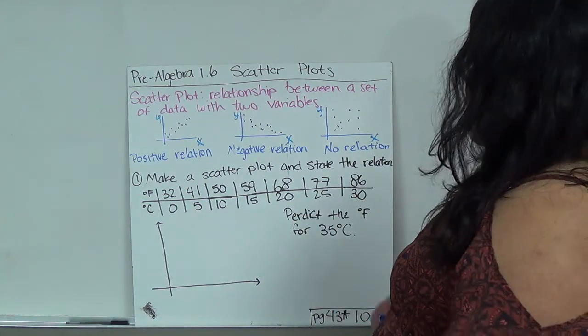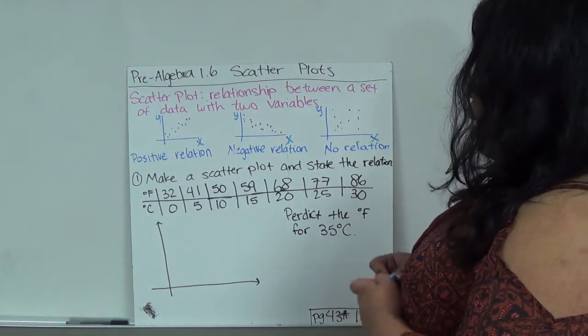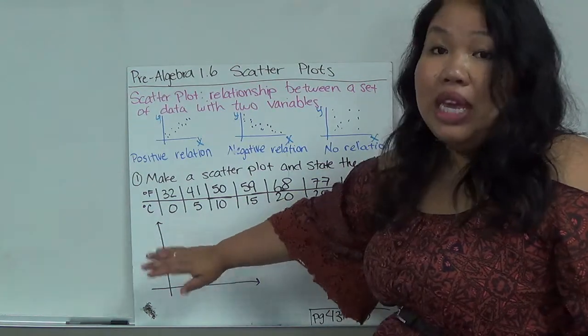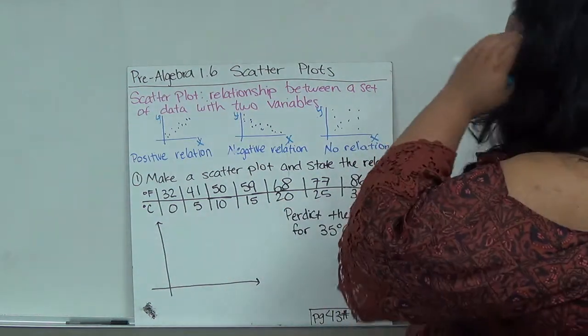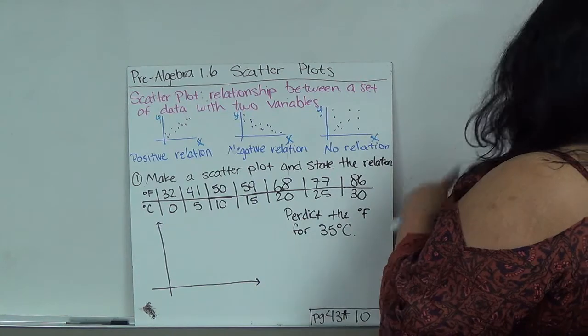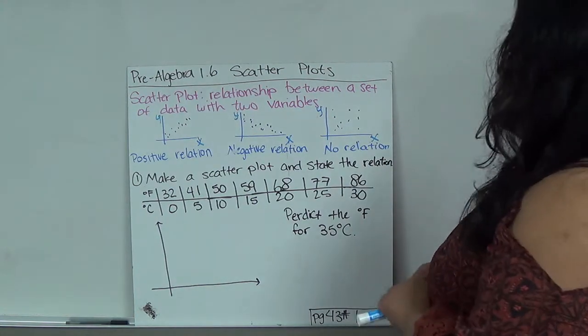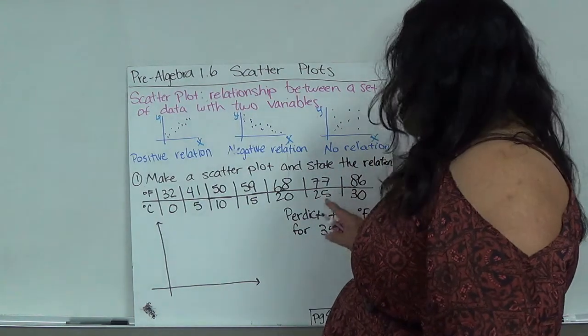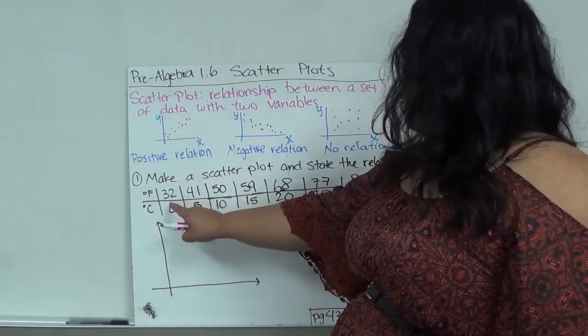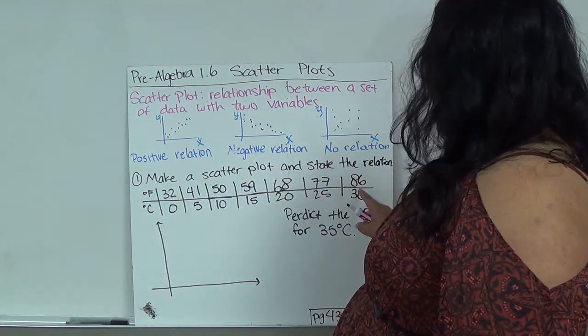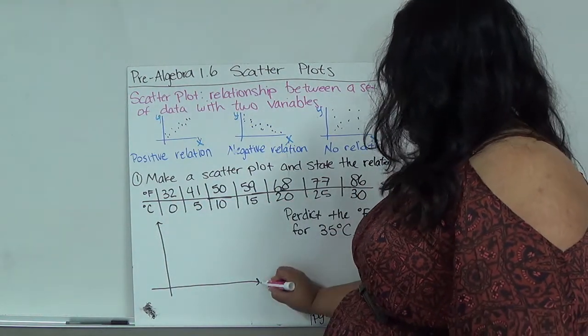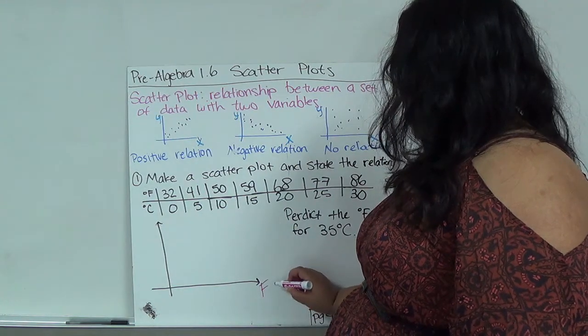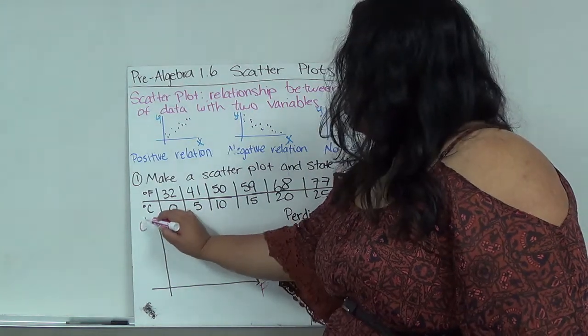For example, the first one is asking us to make a scatter plot. Before I do anything I need to make increments. I have to look what's my smallest number and what's my biggest number. Luckily they put this in order so 32 is my smallest and 86 is my biggest. This is my F degrees and this is my C degrees.